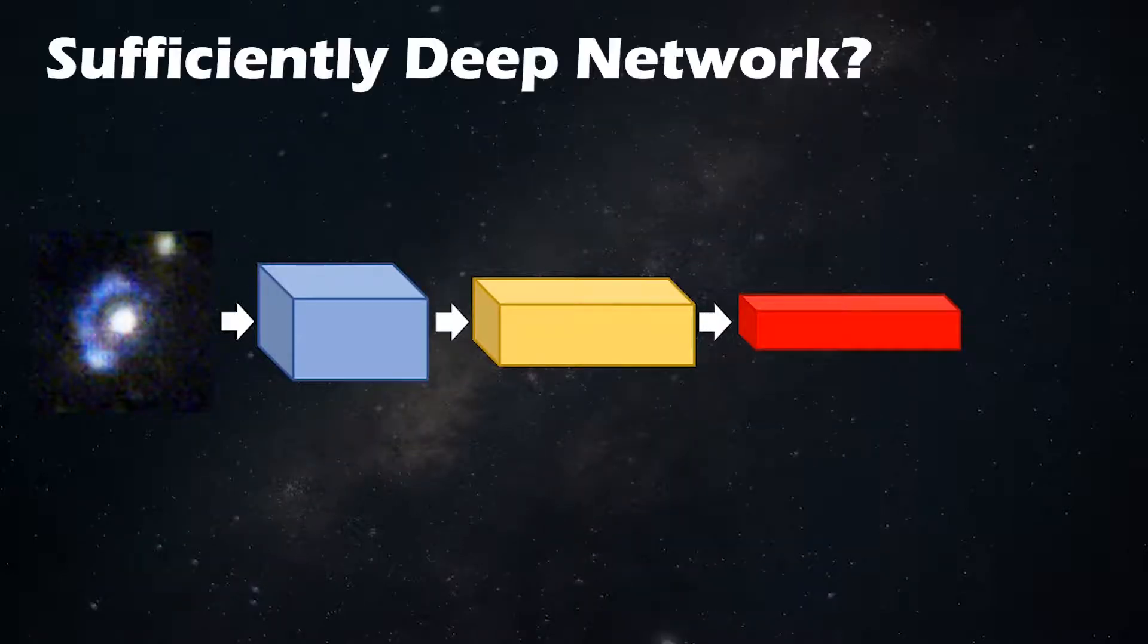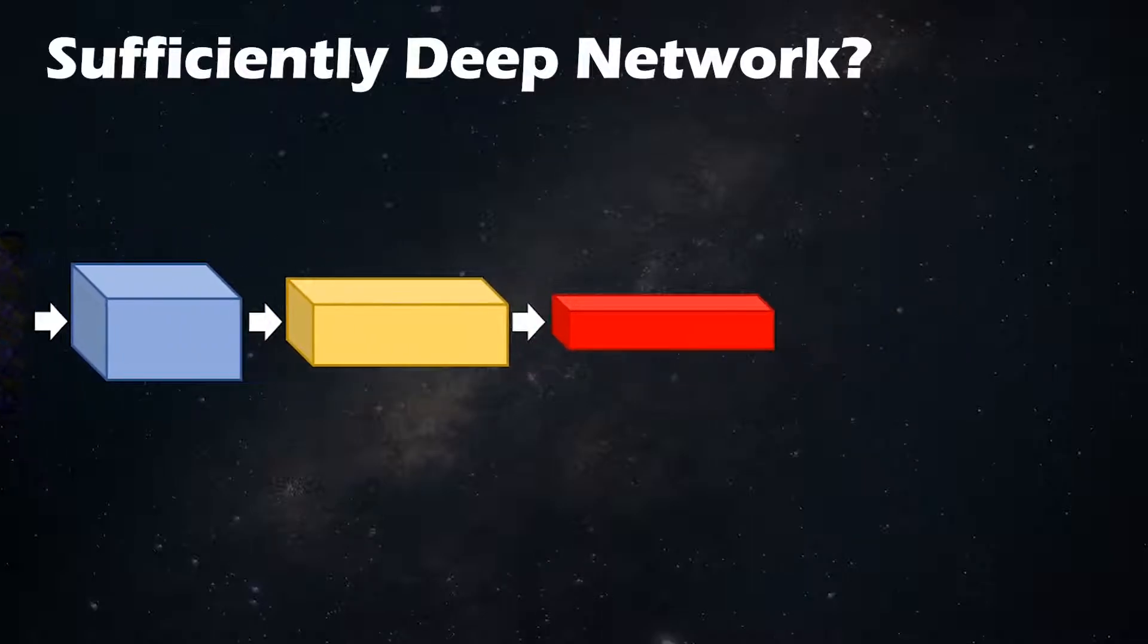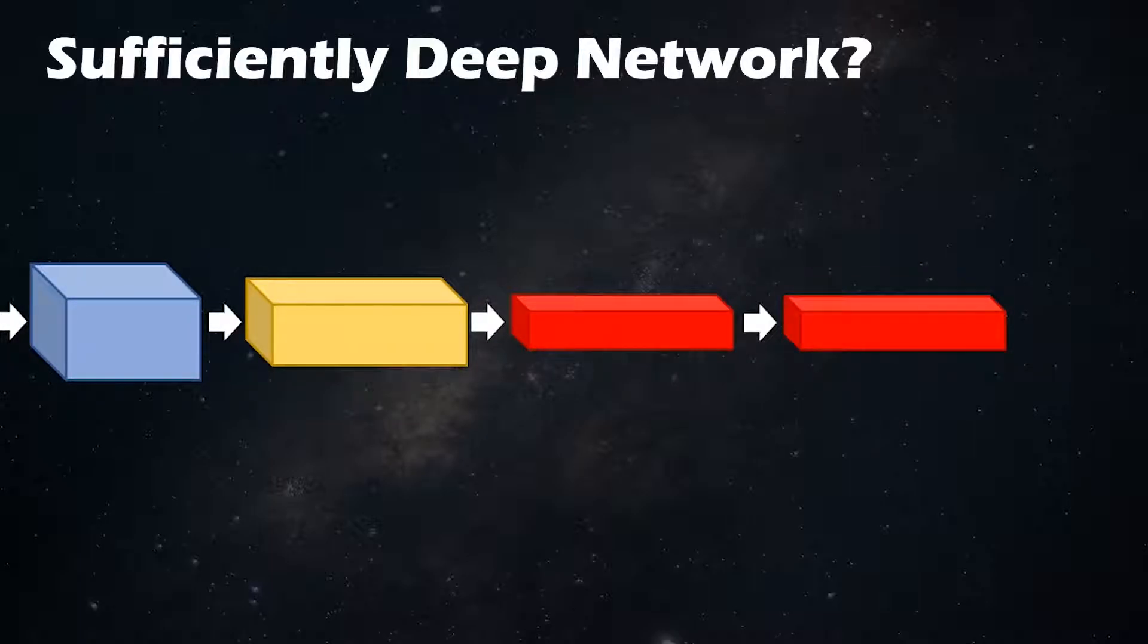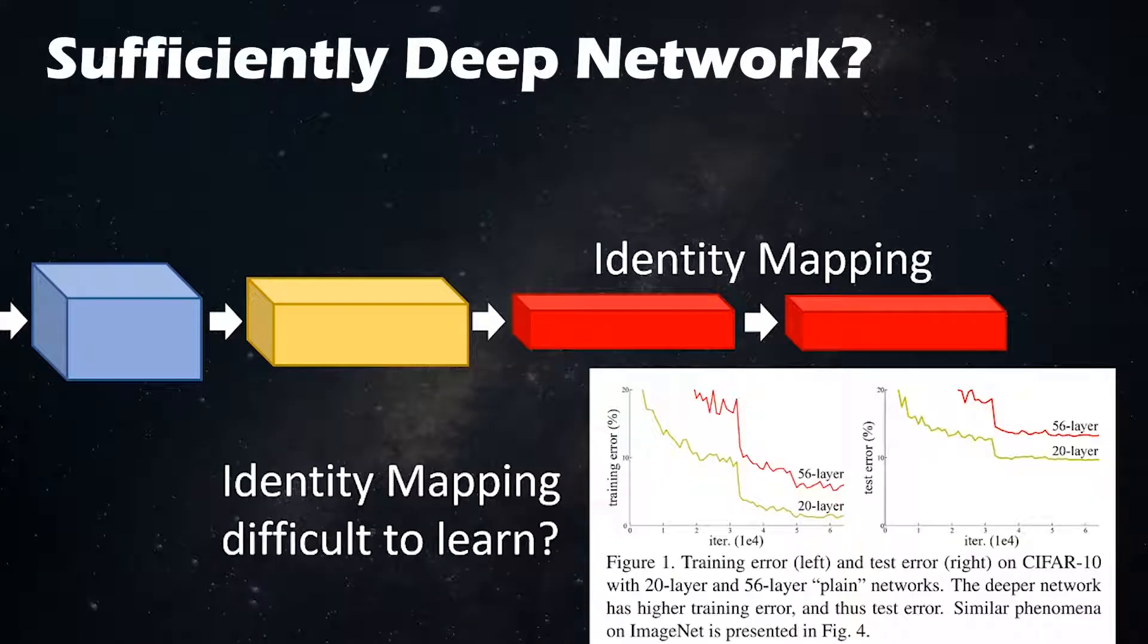Now consider for a sufficiently deep network, your model can calculate a strong set of features for its task. What will happen if you try to add another block to an already sufficiently deep model? Since at a certain depth your model has already calculated some strong features, the next block should aim to be a copy of the previous block, aka an identity mapping. But the degradation results suggest that there's difficulty in learning this identity mapping.